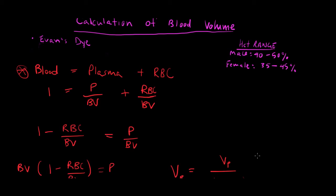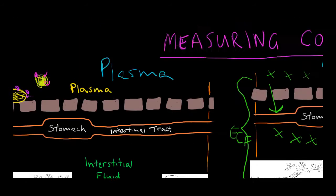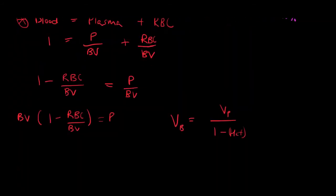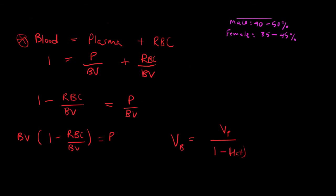Let's do a worked example. Plasma is typically three liters in volume. To calculate blood volume for a typical healthy female with a plasma volume of three liters and a hematocrit of 40% (0.4), we use: blood volume equals plasma volume divided by (1 minus hematocrit) = 3 liters / (1 − 0.4) = 3 / 0.6 = five liters. Five liters is the typical blood volume.